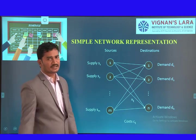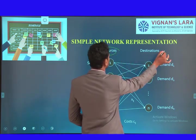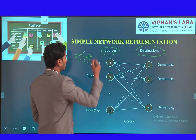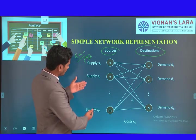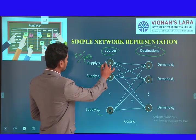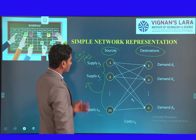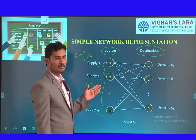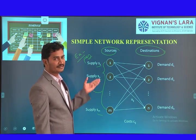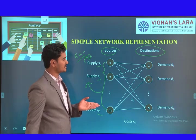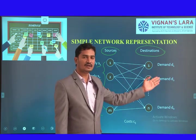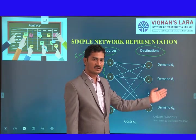This is a network representation of the transportation problem — here are the sources and here are the destinations. In our example we are selling pens in a market. Here we have a total of M supply stations. These could be product manufacturers, godowns, or warehouses — they are also called supply stations. On the other side we have destinations, which are demand centers, also called the marketplace or customers.